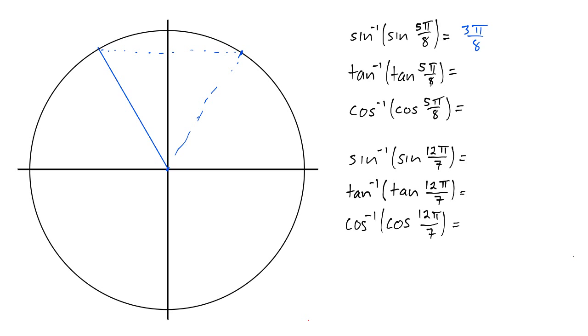Tangent inverse of tangent of 5π over 8 is not going to be the same thing. We need to find a place in the unit circle where y over x is the same as it is at this point up here where the angle is 5π over 8. We need, therefore, to be in the fourth quadrant because tangent is negative in the second quadrant and also in the fourth quadrant.